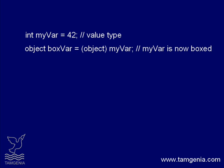Now let's see what unboxing is. Here we are casting the object type boxvar back to an integer type myvar. When unboxing is happening, it extracts the value type from the object. Boxing and unboxing both have performance costs. When a value type is boxed or an object type is unboxed to a value type, both casting processes are computationally expensive — so think twice before you do this.